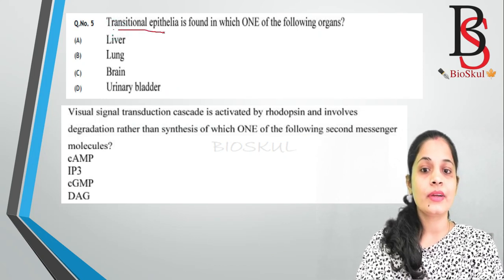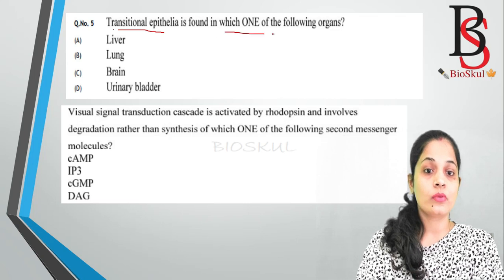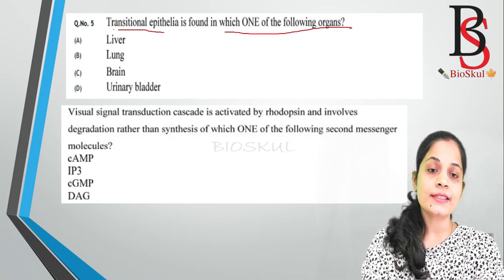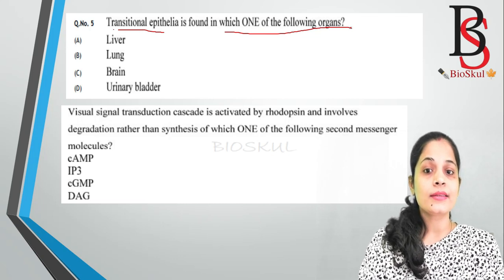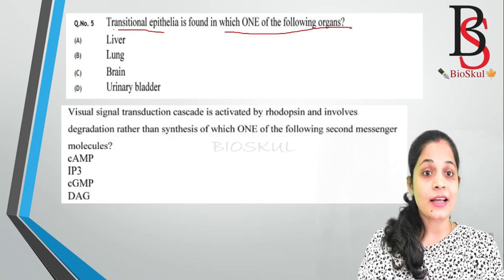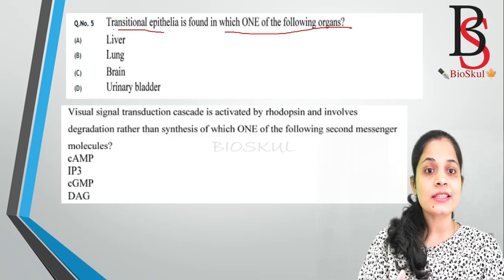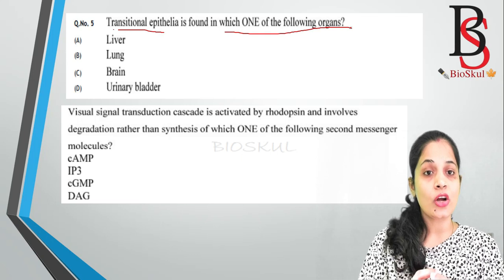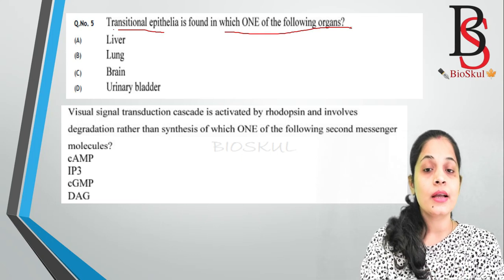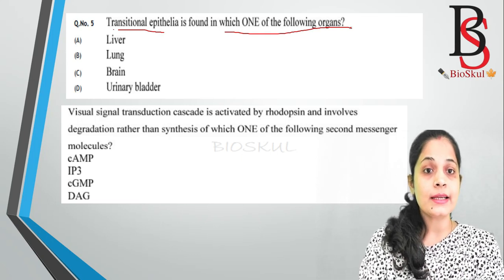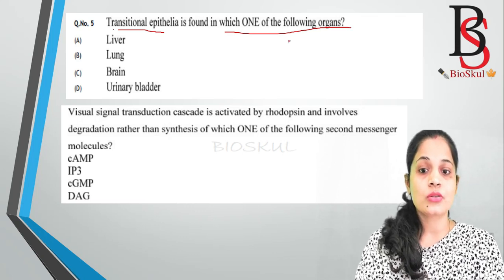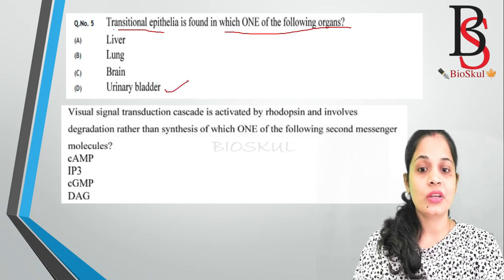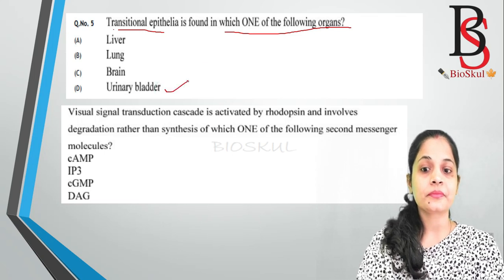Question five: transitional epithelia are found in which one of the following organs? Transitional epithelia is a stratified epithelial cell with multiple layers. It is named 'transitional' because it changes shape — it can contract or expand. This type of epithelial cell is found in the urinary bladder, ureter, and urethra. The correct answer is urinary bladder.